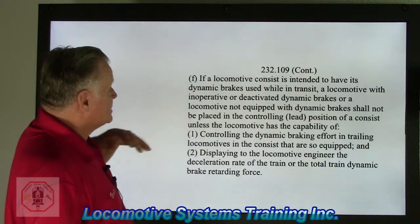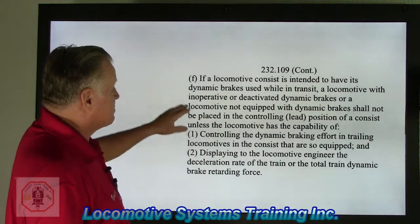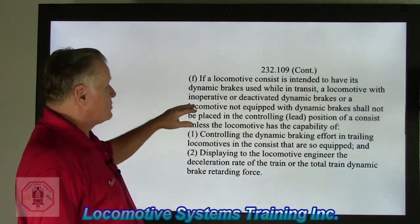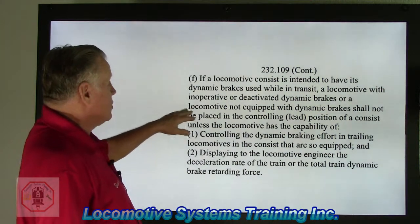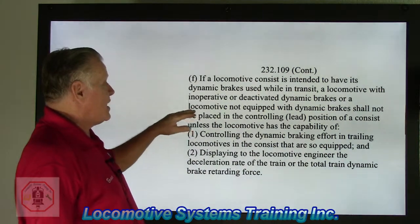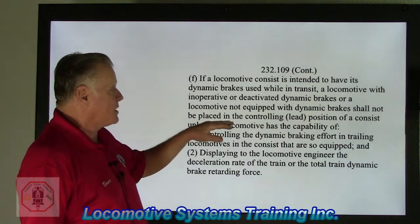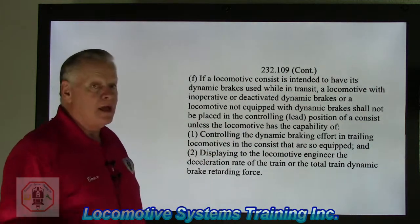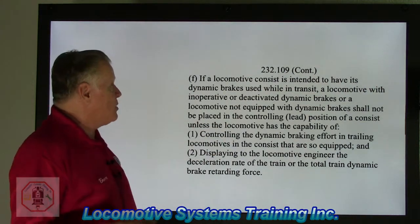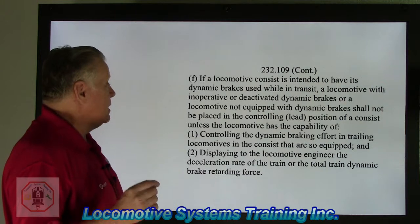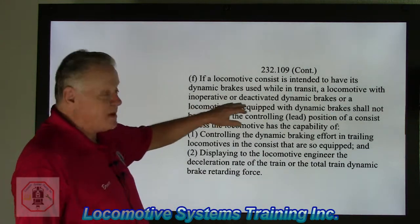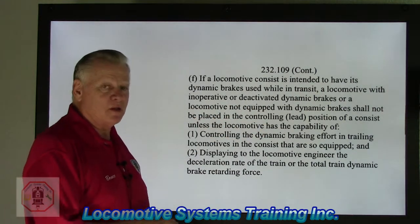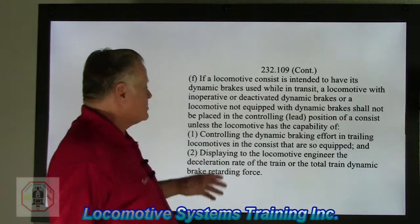Section F: if a locomotive in a consist is intended to have its dynamic brake used while in transit, a locomotive with inoperative or deactivated dynamic brakes, or a locomotive not equipped with dynamic brakes, shall not be placed in the controlling position of a consist. If it has inoperative or deactivated dynamic brakes, you cannot put that locomotive in the lead position.